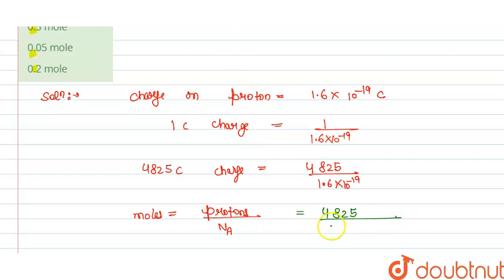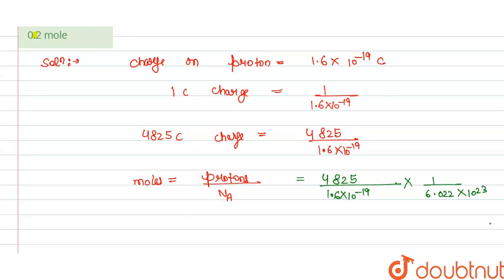divided by 1.6 into 10 power minus 19 and this is multiplied by Avogadro number, that is 6.022 into 10 power 23. So on solving this we get moles is equals to 0.05 mole and this is our answer.